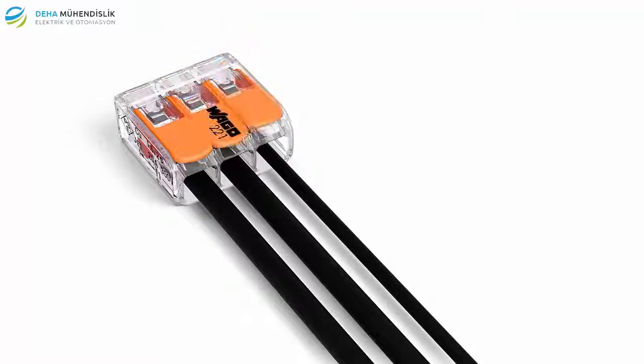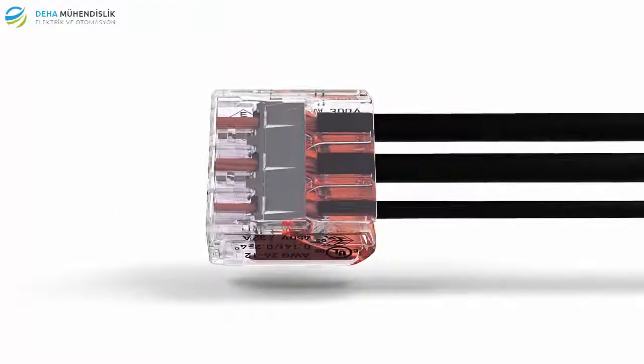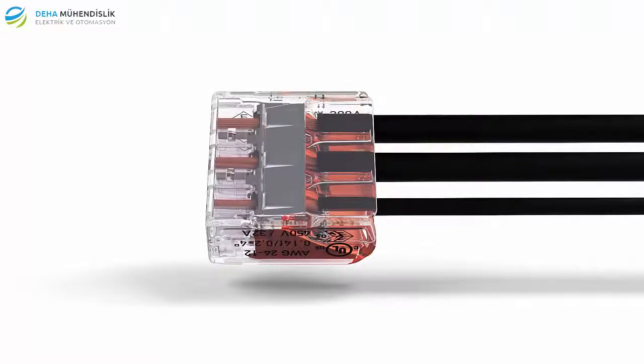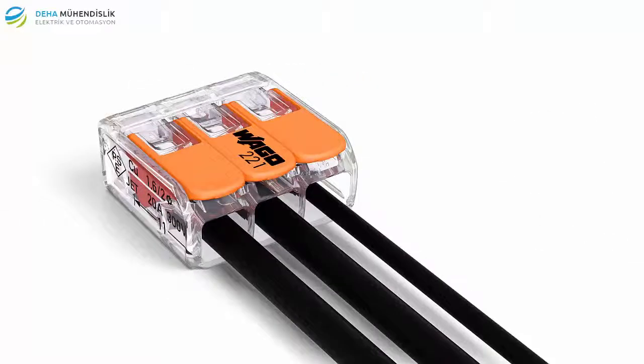The transparent housing enables visual inspection of the correct conductor position, providing a clear view of conductors that have not been inserted far enough or that have not been stripped to the proper length. A gas-tight contact point provides a durable and secure connection between conductor and current bar.